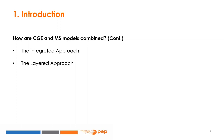The integrated approach replaces the representative household categories in the CGE model with individual households from a nationally representative survey. The layered or sequential approach runs the CGE and MS models one after the other; for example, the output of one model is used as the input by the other model.